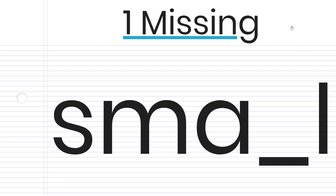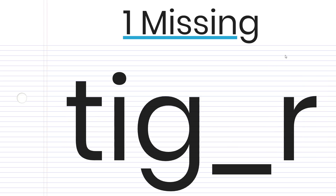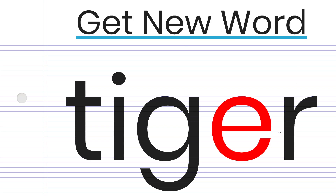This one is 'small,' and the missing letter is the extra L. And I think this will be our last one — this word is 'tiger,' and we needed that E.